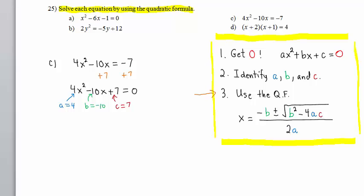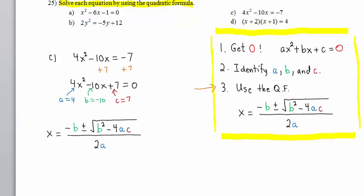Now, let's use the quadratic formula. b is -10, so we have the opposite of -10, plus or minus the square root of b². Since b is negative, we must put it in parentheses. Minus 4 times a, which is 4, times c, which is 7, all divided by 2 times a, where a is 4. So we have 10 ± √(100 - 4×4×7).